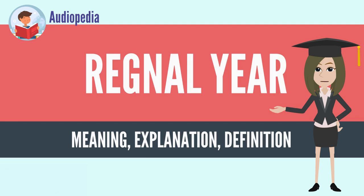Regnal years are finite era names, contrary to infinite era names such as the Christian era, the Hijri era, the Julian era, and so on.